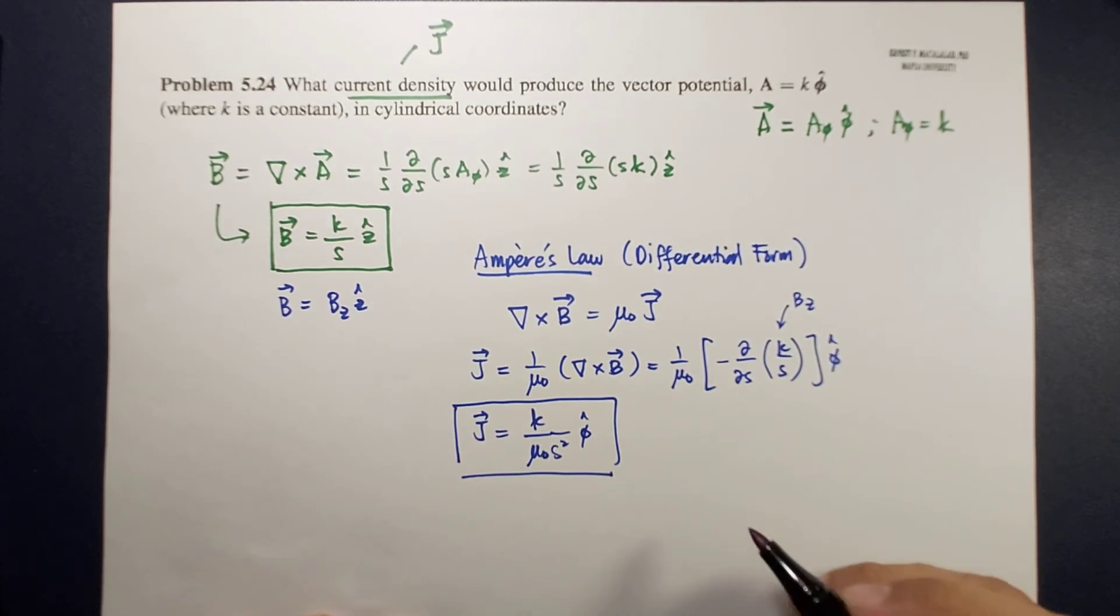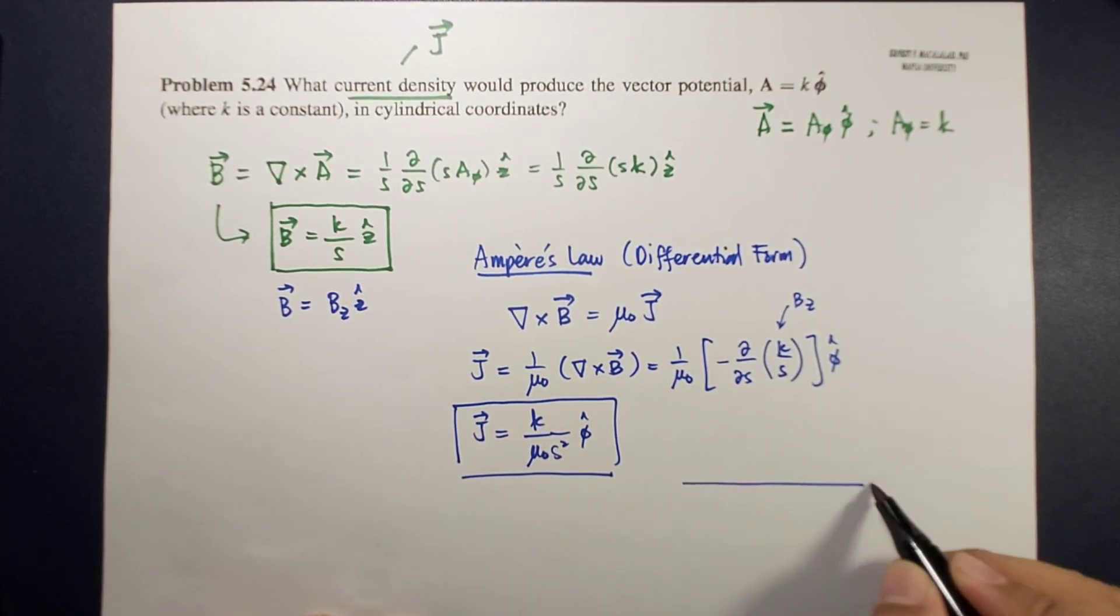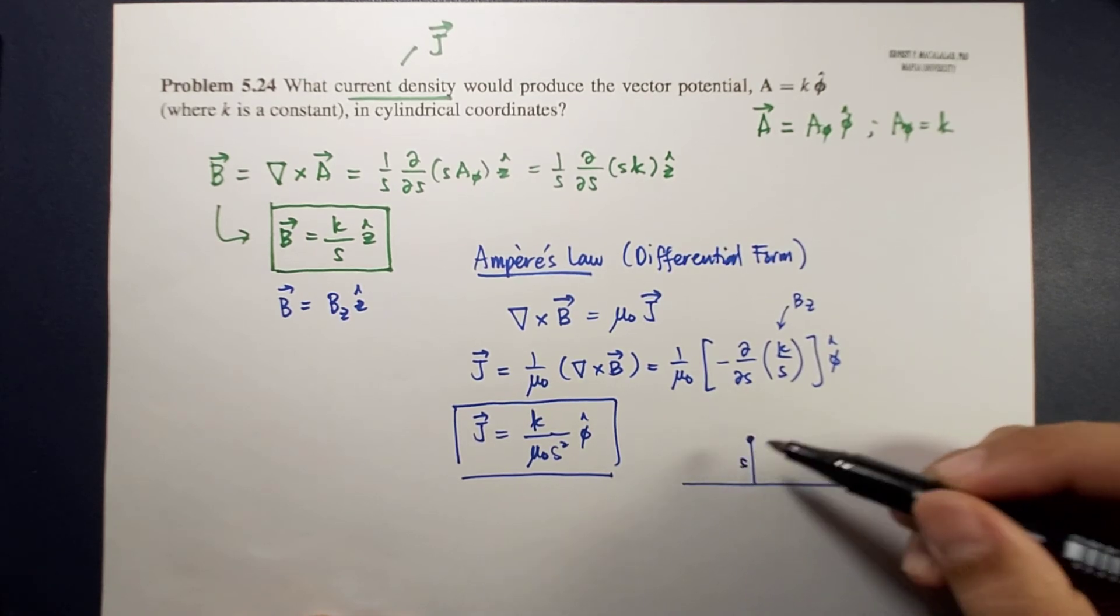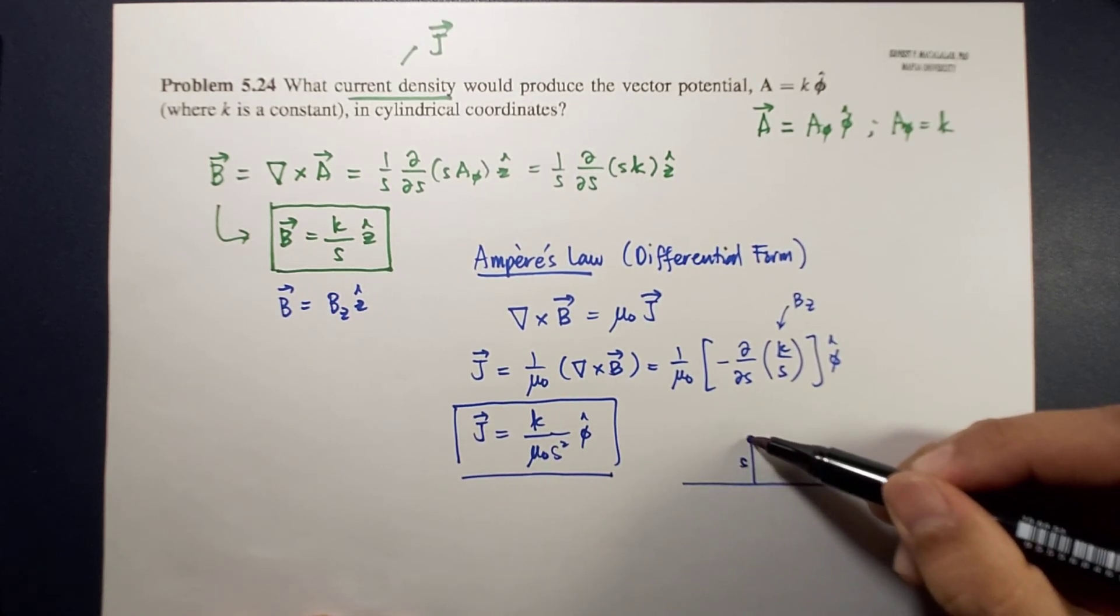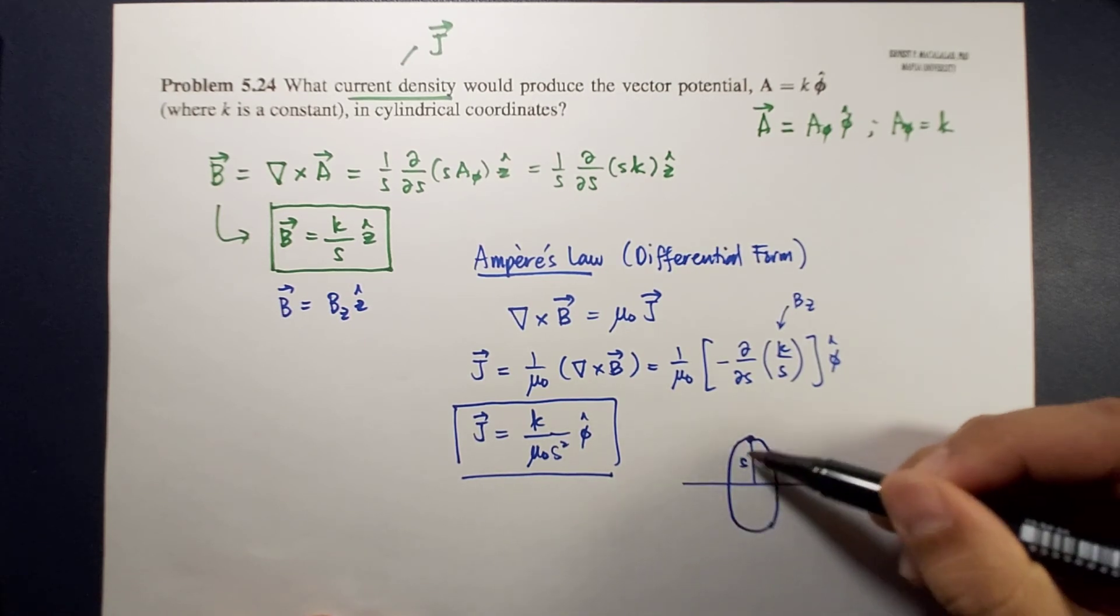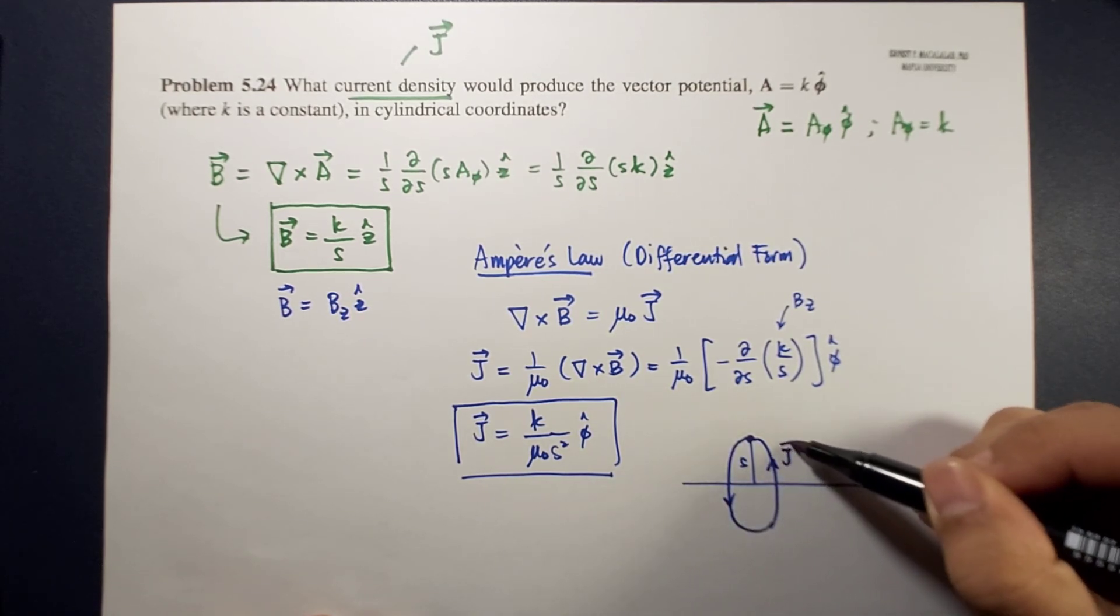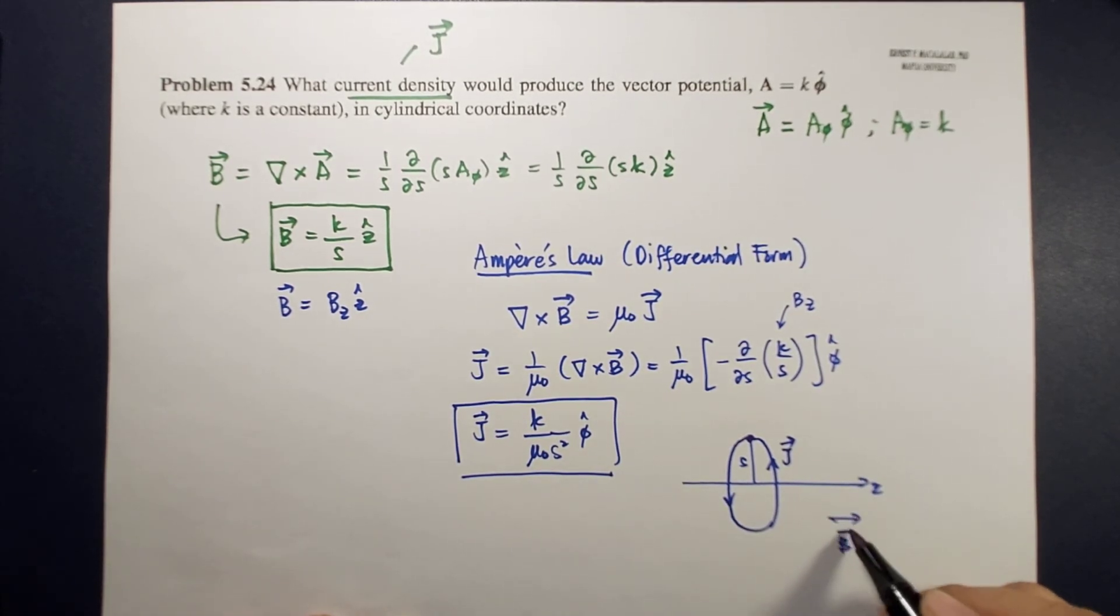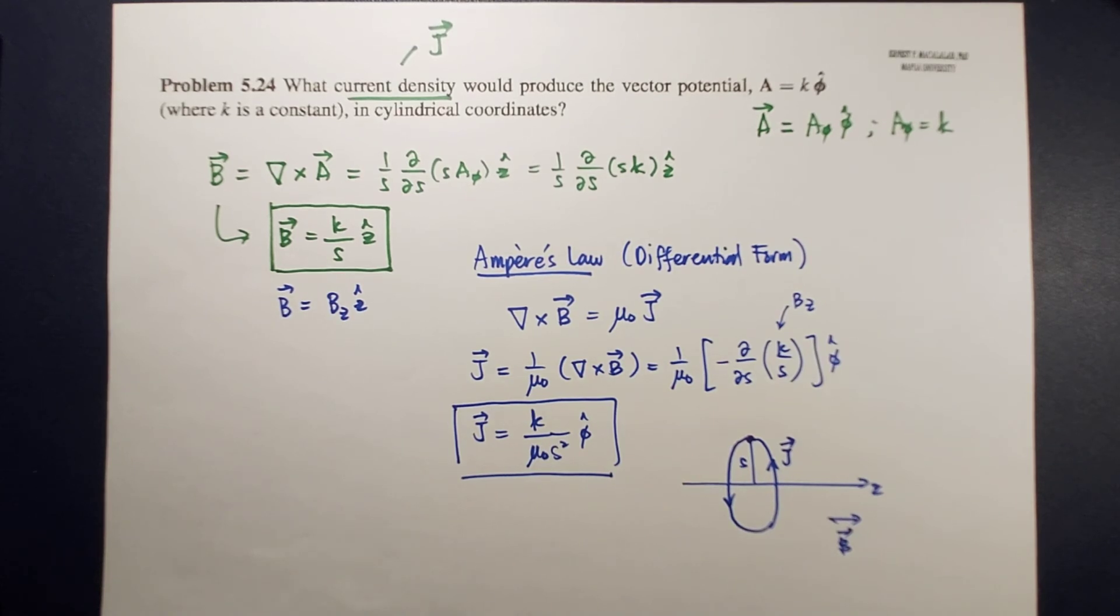For example, this is your z axis. The direction of your current density would be in this direction. This is the direction of your magnetic field, which is what we expect from the definition of magnetic field.